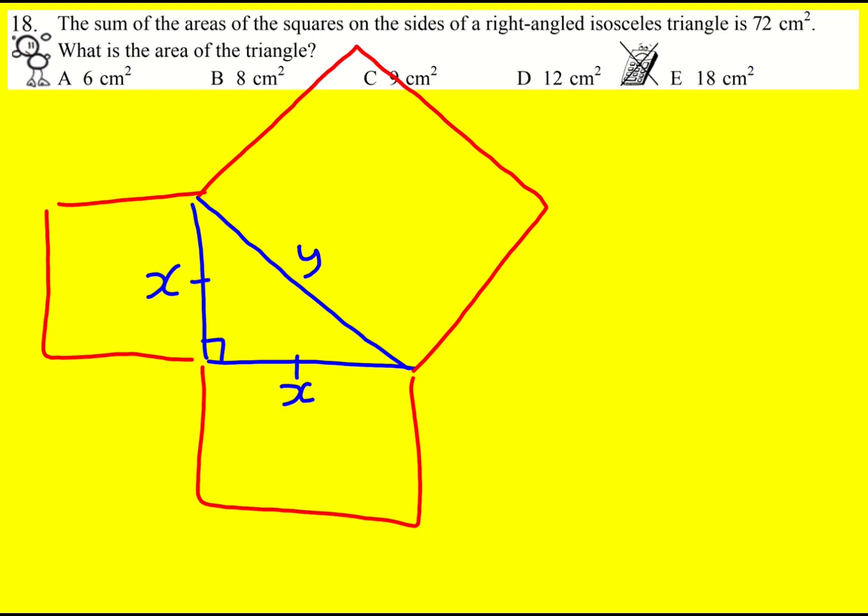Well there's two pieces of information we now have. We know that x squared plus x squared is equal to y squared from Pythagoras's theorem, hence 2x squared is equal to y squared.